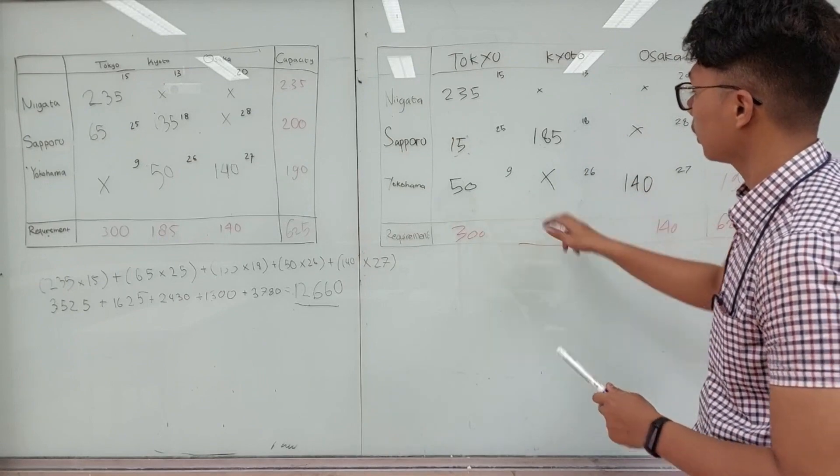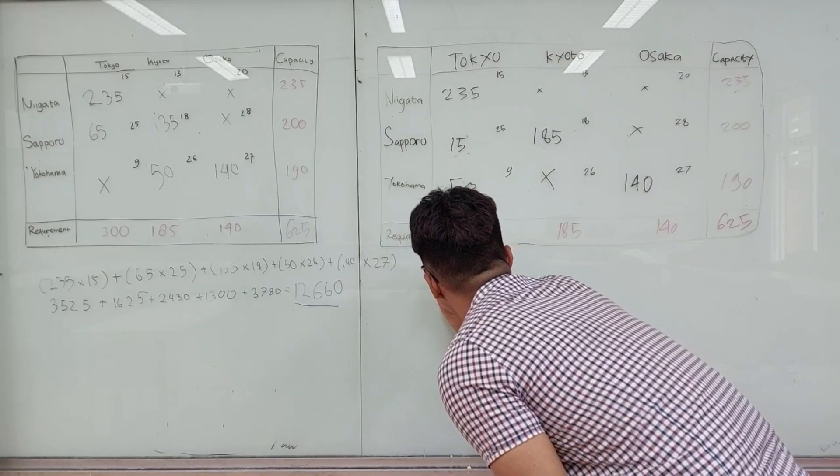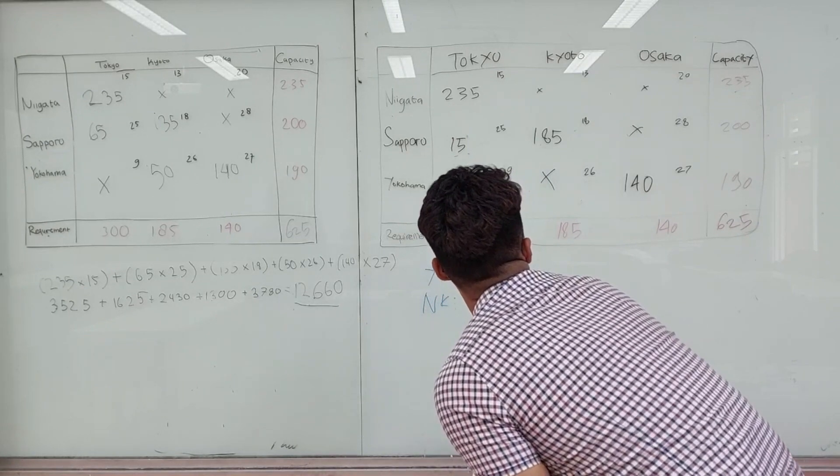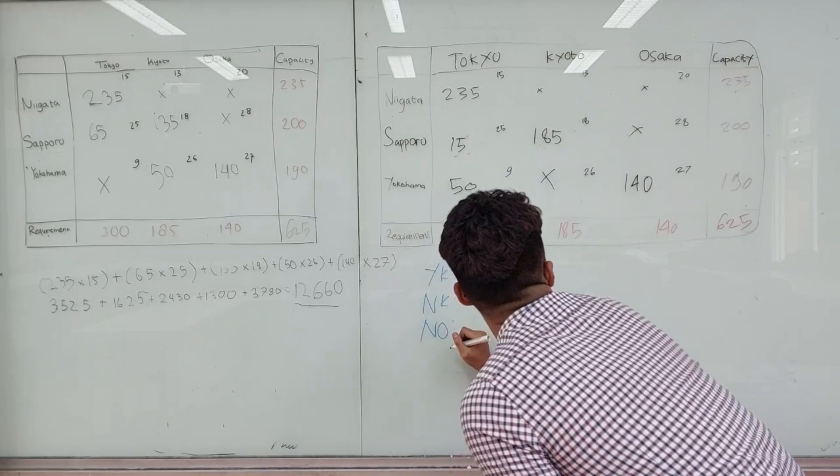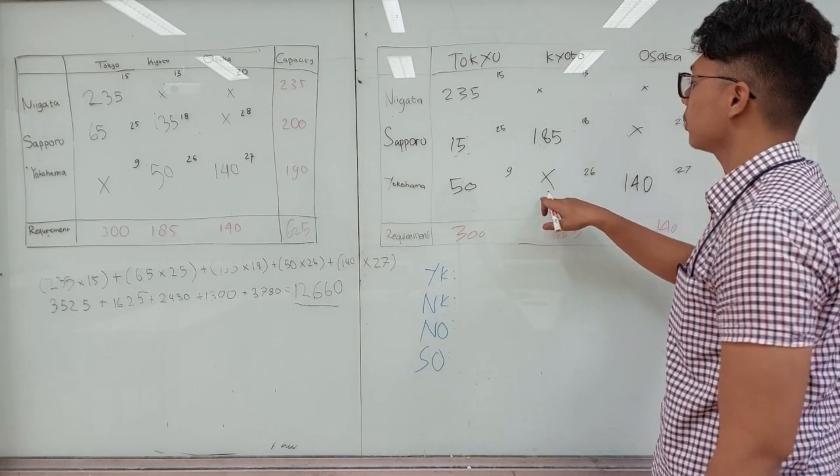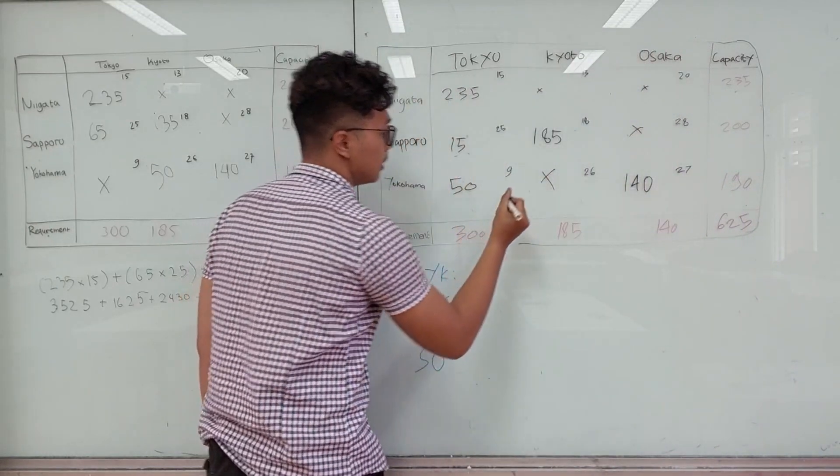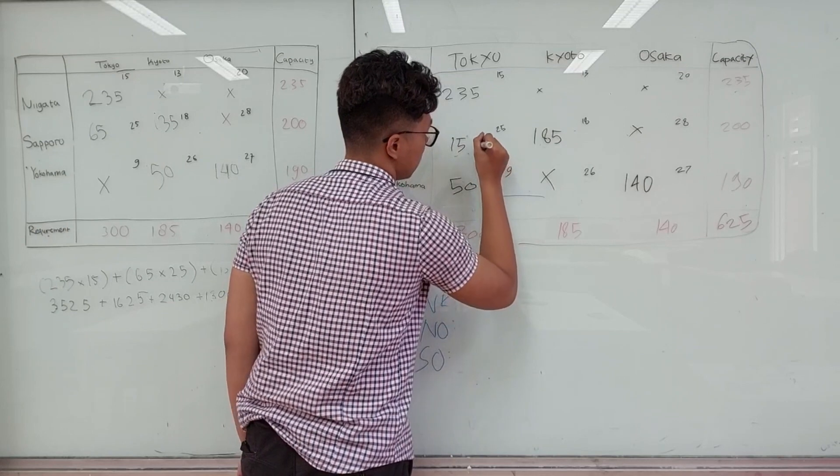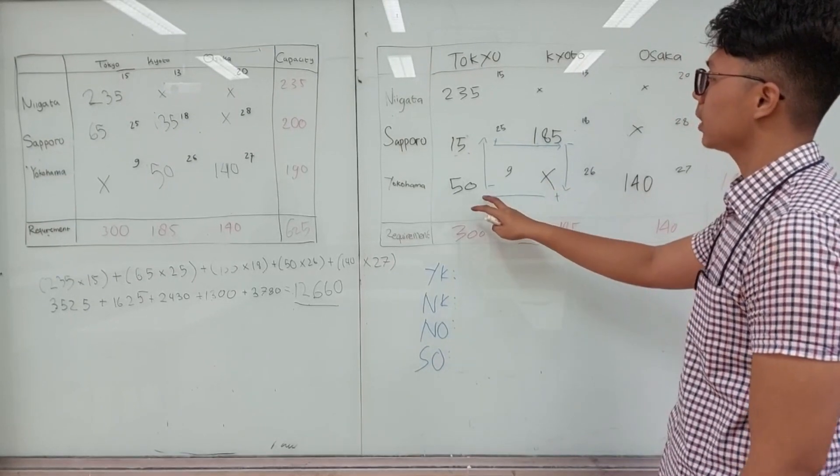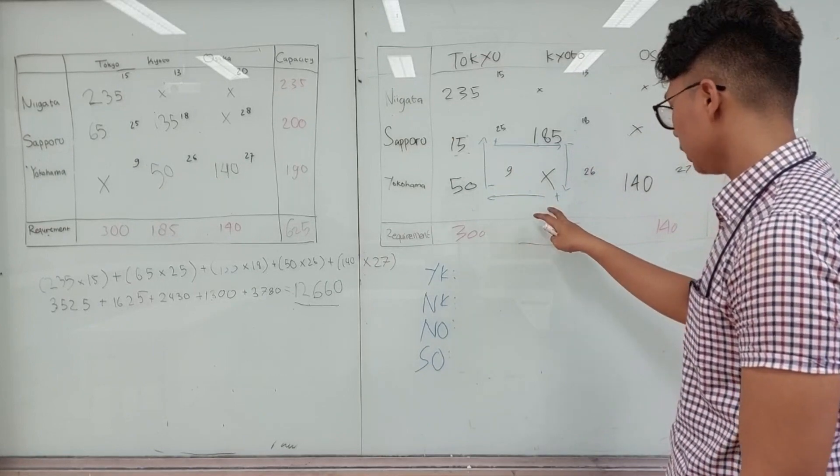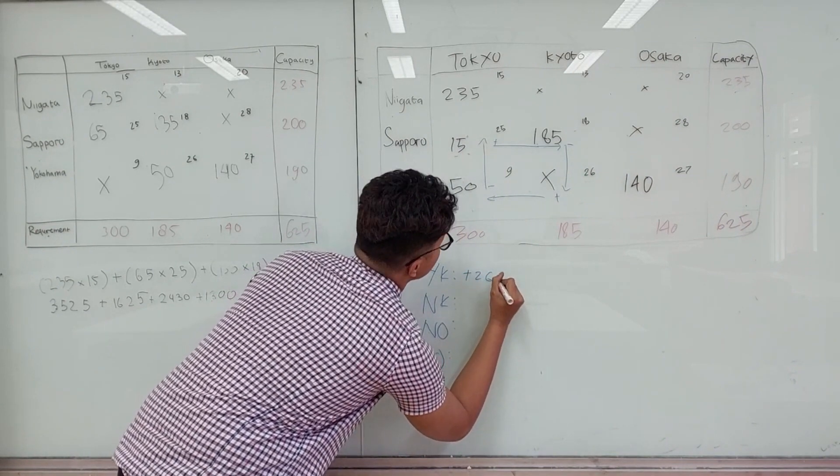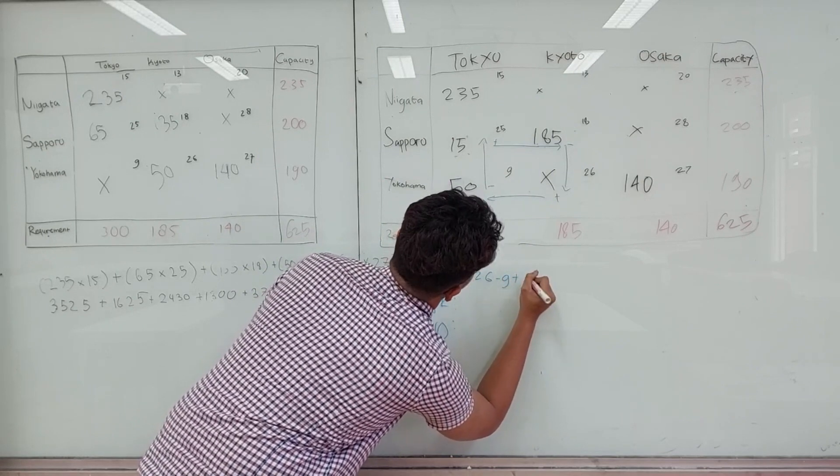We start from Yokohama-Kyodo, so we make EAEK. Using the stepping-stalling method, we start from here. The symbols are plus, minus, plus, and minus. So we calculate: it's plus 26, minus 9, plus 25, and minus 18.